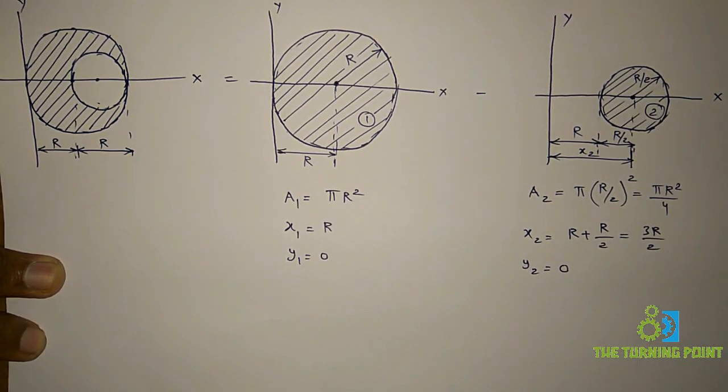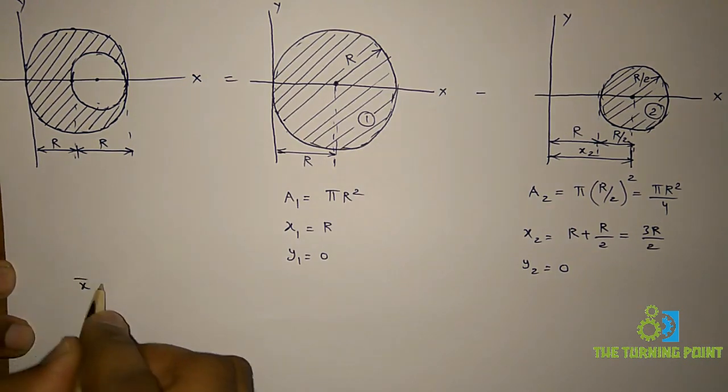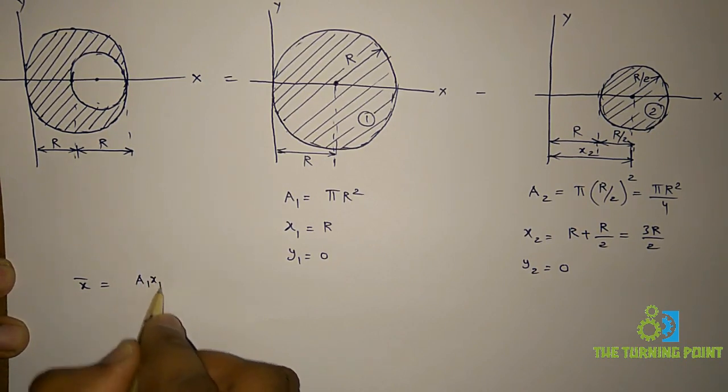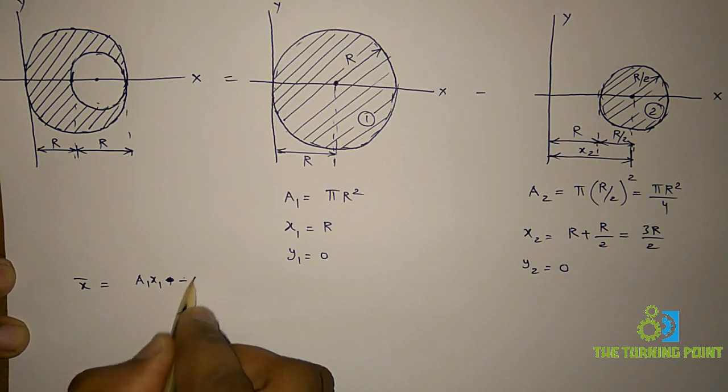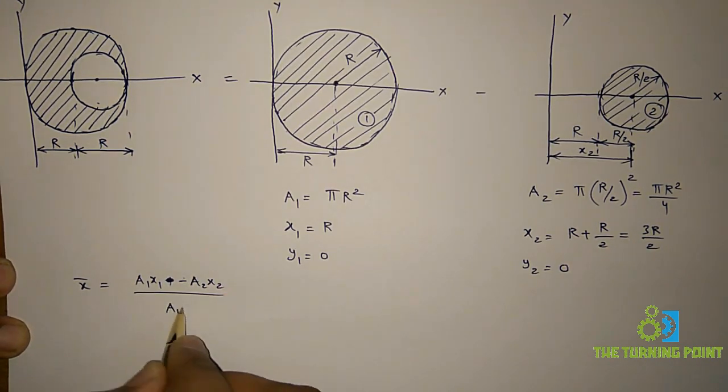So now you can find x bar. x bar is equal to a1 x1 minus a2 x2 divided by a1 minus a2.